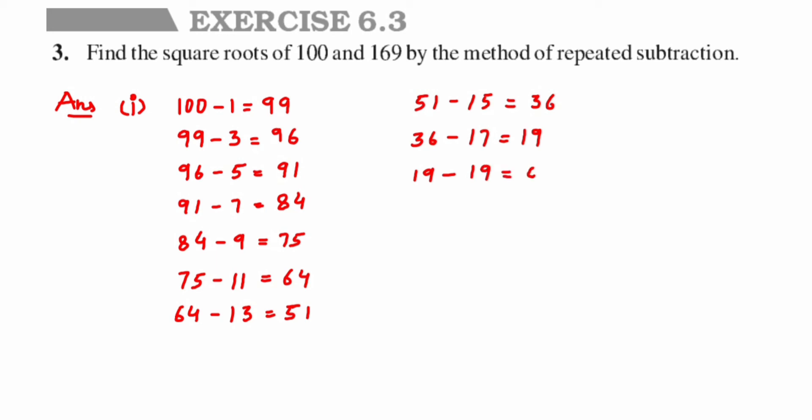And last, 19 minus the next odd number 19 gives us 0. We got the answer 0! If your subtraction is wrong anywhere you will not get 0, so make sure you're taking the correct odd numbers and your subtraction is correct. Now to find the square root of 100, count how many odd numbers or steps you took: 1, 2, 3, 4, 5, 6, 7, 8, 9, 10 — so the square root of 100 is 10.